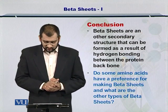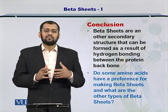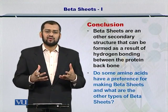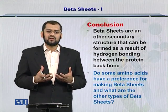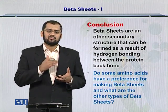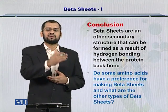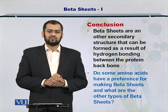In conclusion, beta sheets are another type of secondary structure that exists in proteins, with two types: parallel beta sheets and anti-parallel beta sheets. There are also some preferences within the amino acids that we need to study in order to evaluate their participation in beta sheets as well.